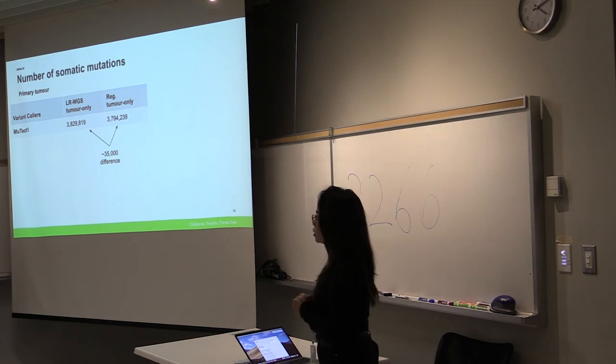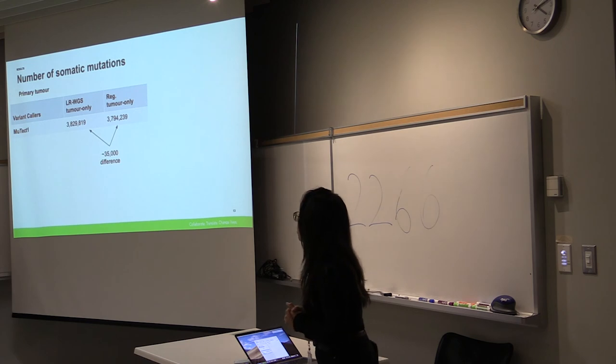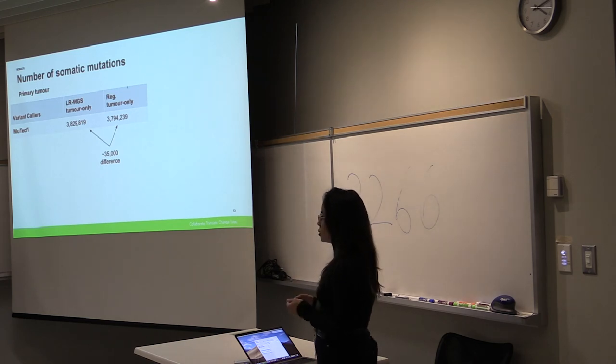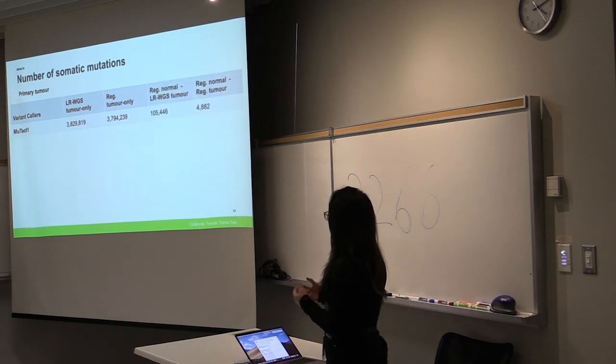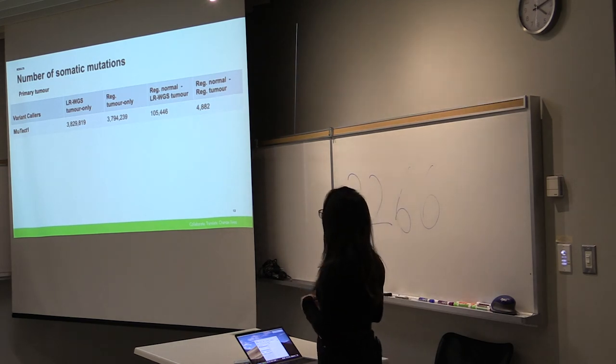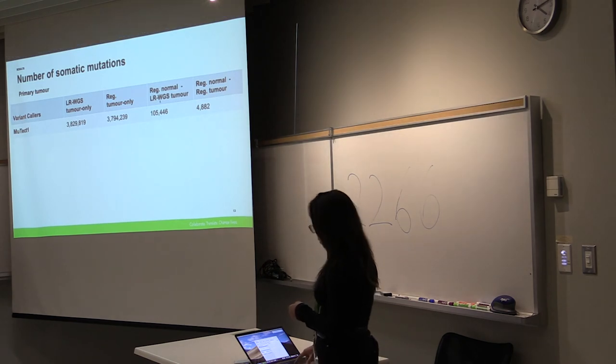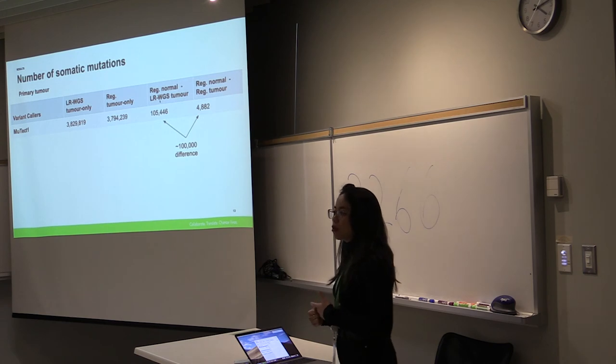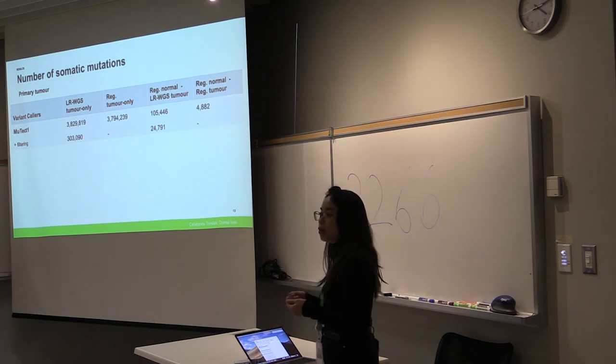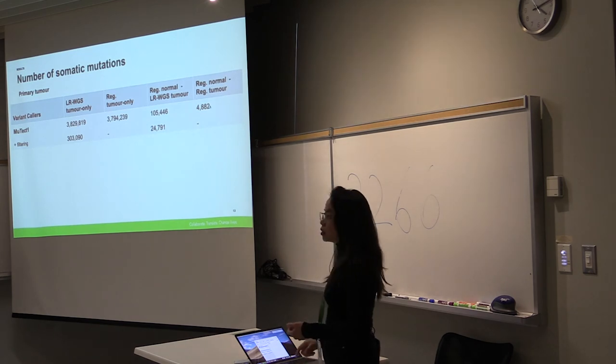And so when we ran it under this somatic mutation caller called MuTect1 and compared the number of somatic mutations in linked reads and in regular reads, we're seeing about a 35,000 difference in the linked reads. And that's fine because MuTect1 isn't made for tumor-only calling, but when we use it in the tumor-normal mode, we still see that same difference when we use the linked reads and we see way more somatic mutations. So this prompted investigation trying to understand why there's so many more. We did some additional filtering and we got it down to a magnitude of difference, but this still is incomparable to when we use regular samples.